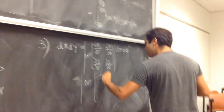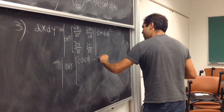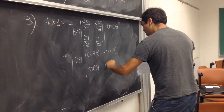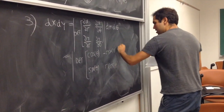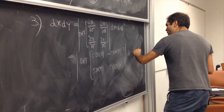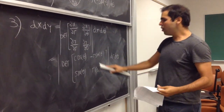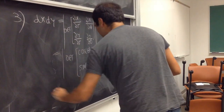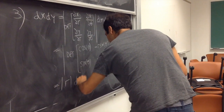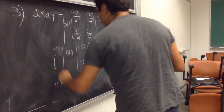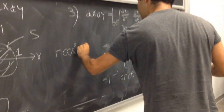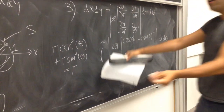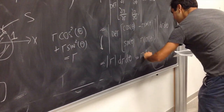So we compute the determinant of the matrix with entries [cosine θ, −r sine θ; sine θ, r cosine θ]. That gives r cosine squared θ plus r sine squared θ, which simplifies to r. Since r is non-negative, the absolute value is just r, so dx dy = r dr dθ.